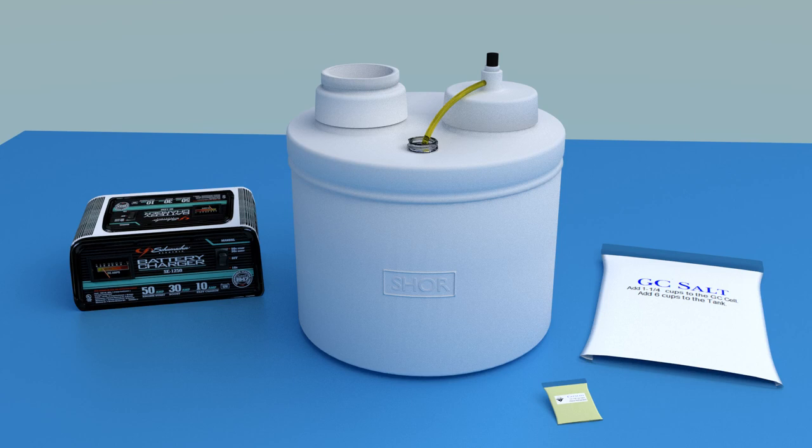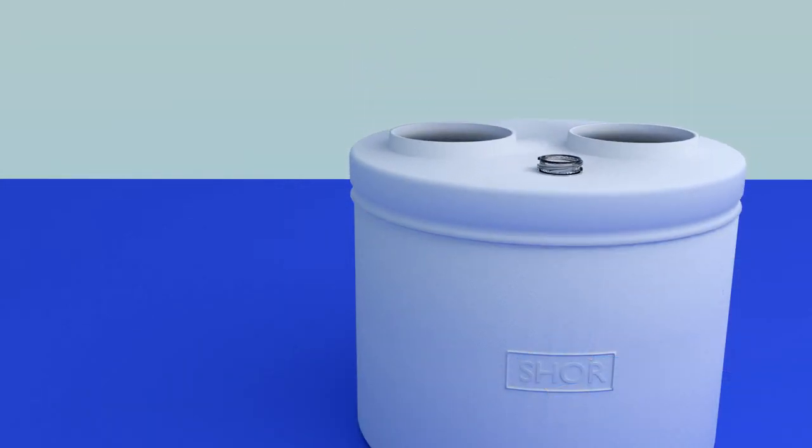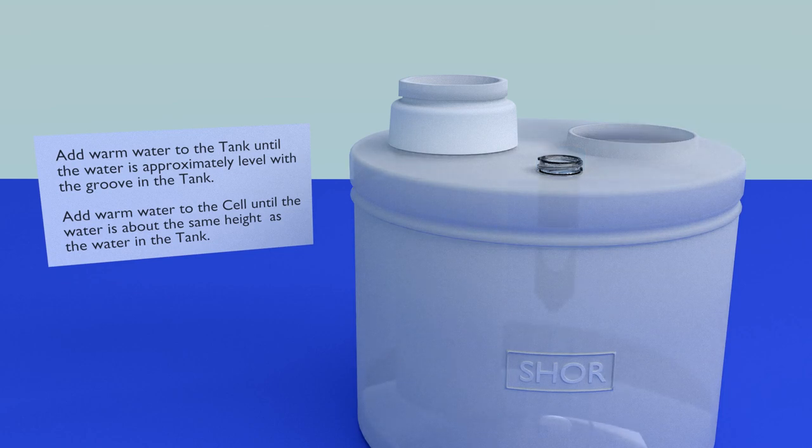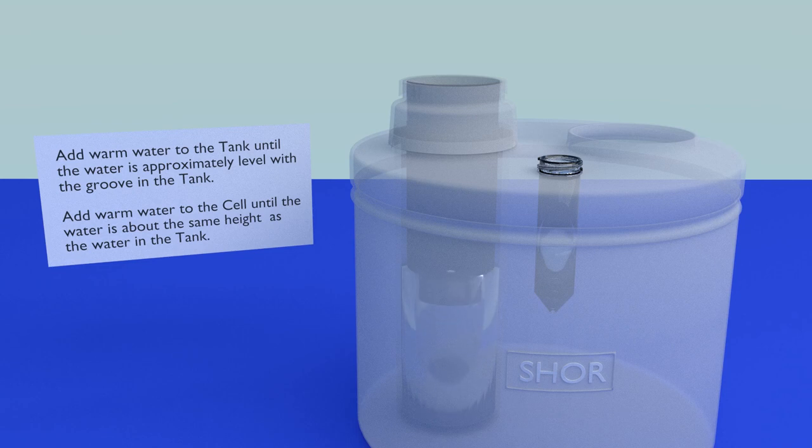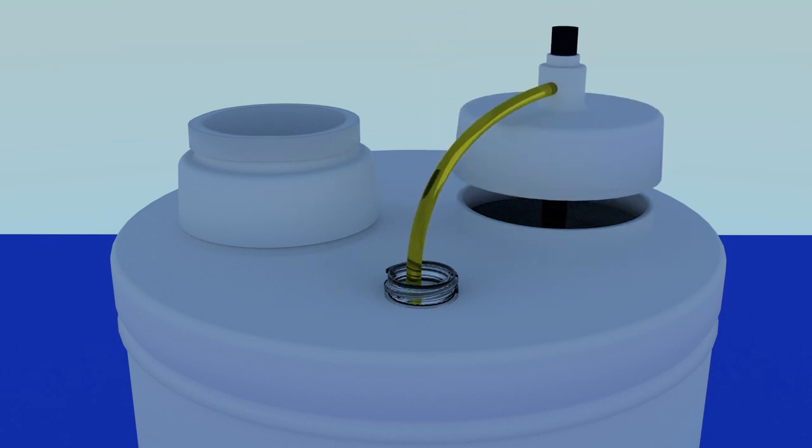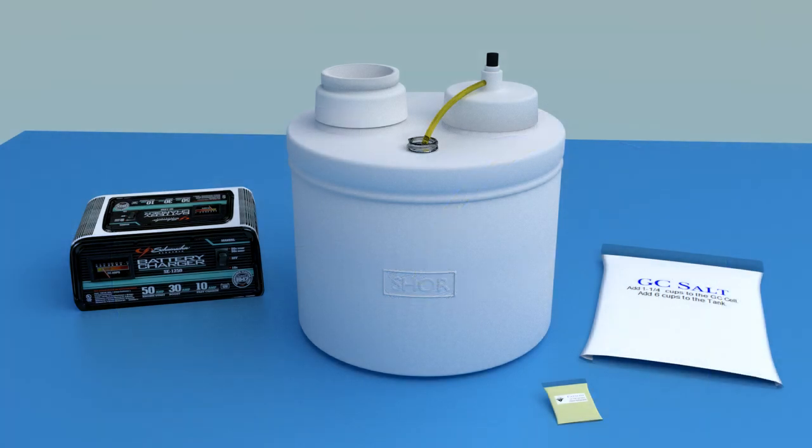Once your metal is prepared to be refined, it's time to set up the refining system. Snap the lid onto the tank. Insert the cell. Add to the cell 1 and 1 quarter cups juicy salt. Add to the tank 6 cups of juicy salt. Place the anode cap and pouch. Add warm water to the tank until the water level is approximately equal to the groove in the tank. Add warm water to the cell until the water level is approximately the same as the water level in the tank. Place the cathode cap, inserting the end of the scrubber hose into the activated charcoal. Ok, so now with everything set up, let's get to the actual refining.